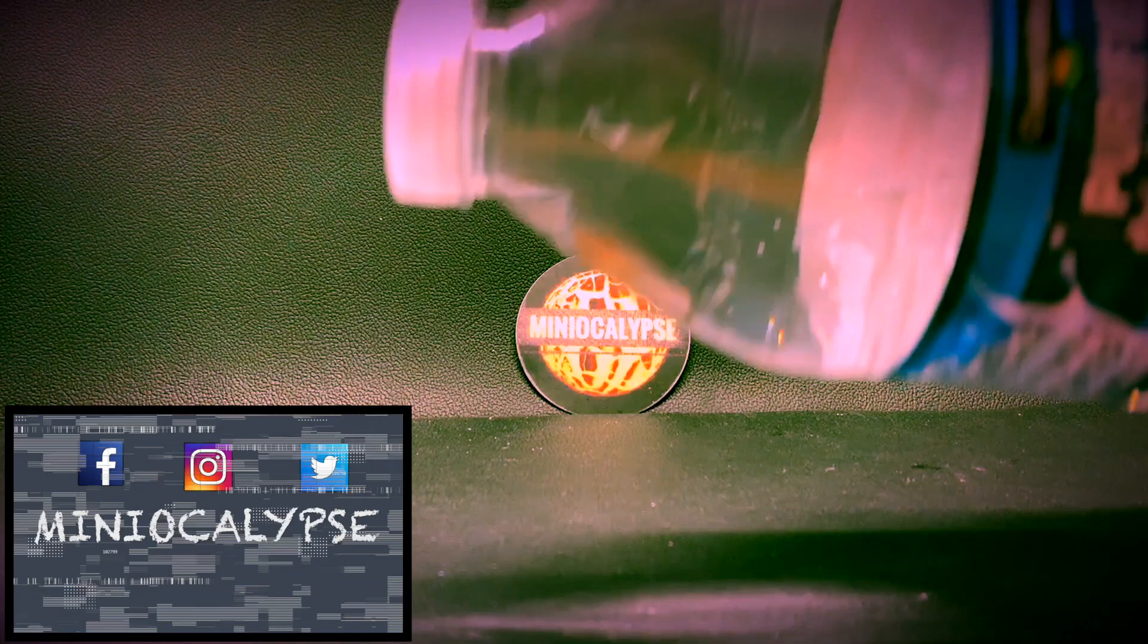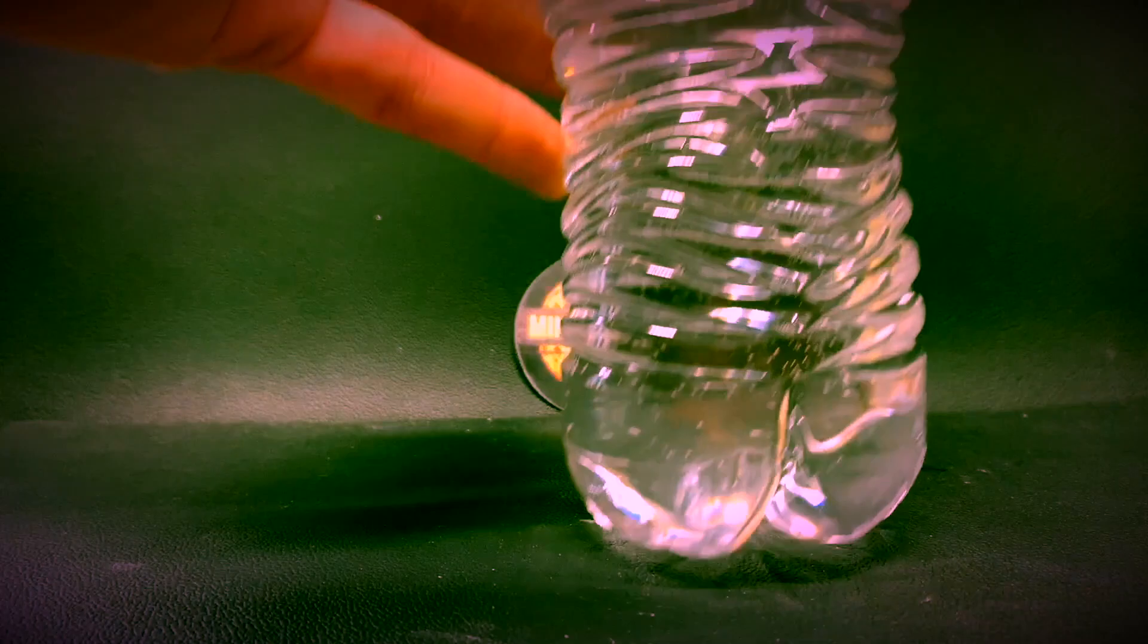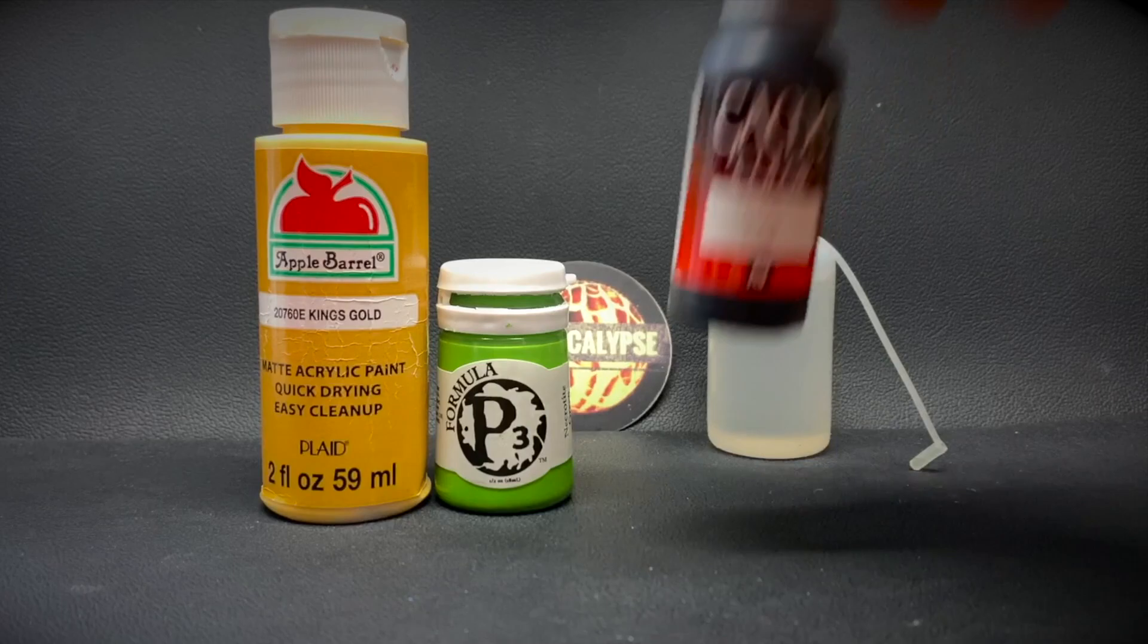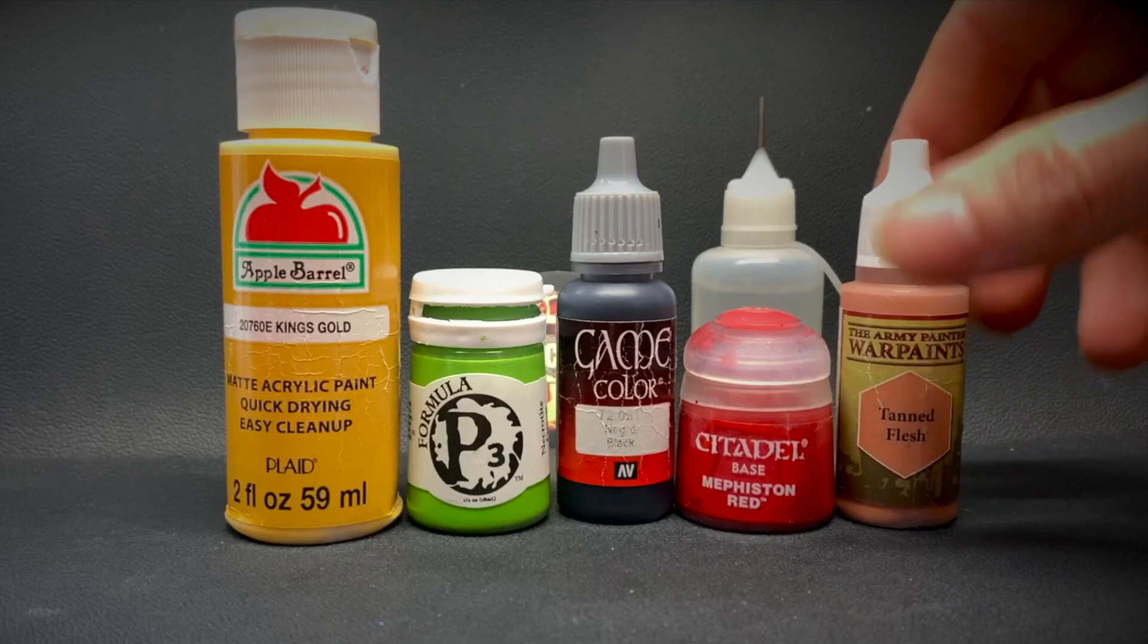Today, how to make your own wash. Let's get started with a few supplies that you'll need. You need to grab up some water - me, I like to keep it in a dropper bottle. You'll need some paint. For this video, I'll be using paint from across multiple paint ranges to explain how they act a little differently while making them into a wash.